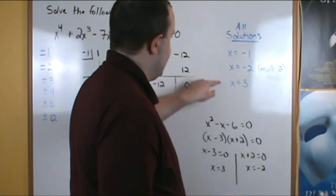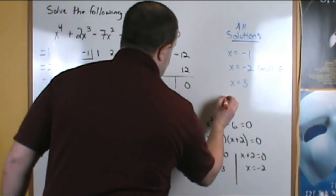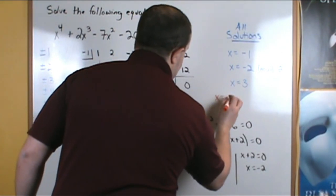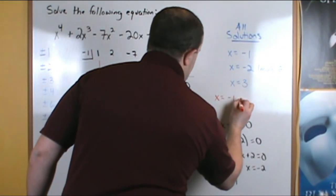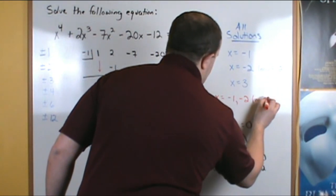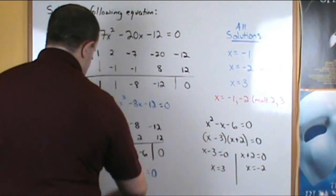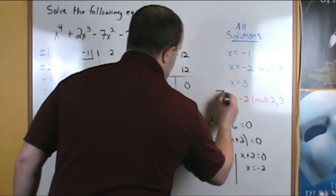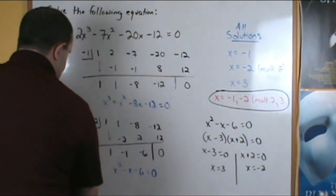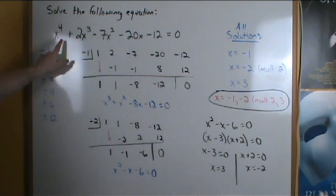To further write our solutions here, we can also write it as x equals negative 1, negative 2 with a multiplicity of 2, and positive 3, and this answer is what we're looking for. Those are all the solutions to this equation here.